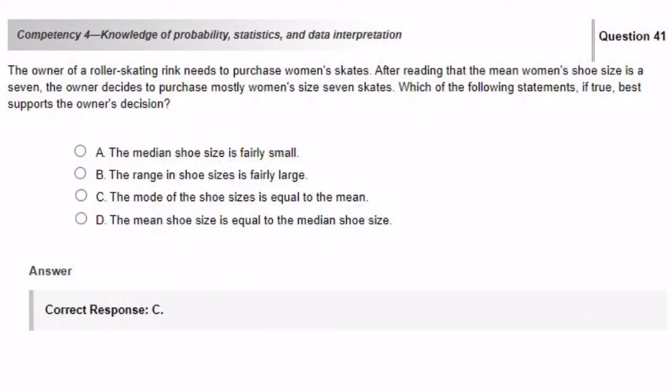The owner of a roller skating rink needs to purchase women's skates. After reading that the mean women's shoe size is a 7, the owner decides to purchase mostly women's size 7 skates. Which of the following statements, if true, best supports the owner's decision? The owner decides to use the mean as a determining factor in purchasing the skates for the women. So we can eliminate answer choices A and B because they are making reference to the median and the range. We can also eliminate answer choice D because it is comparing the mean and the median. So C, the mode of the shoe sizes is equal to the mean is the statement that best supports the owner's decision.